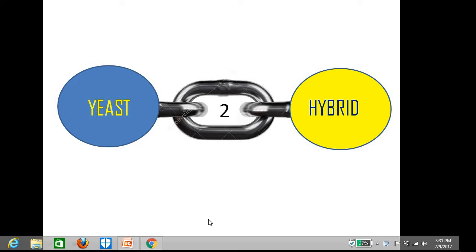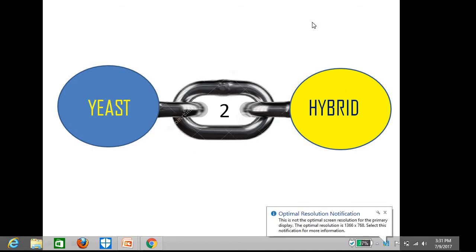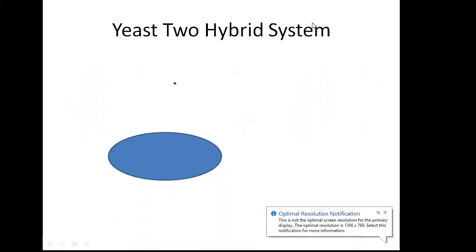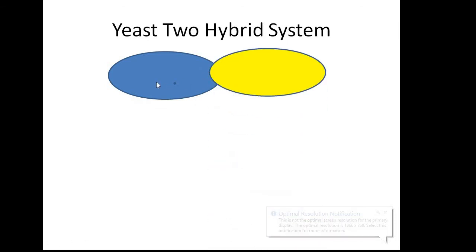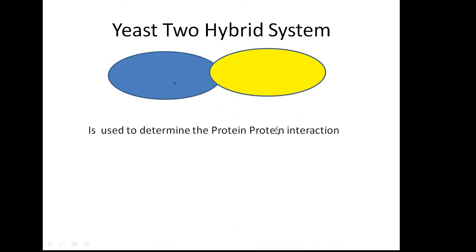Hello friends, today we will discuss the two-hybrid system, a method that is widely used in molecular biology to see whether two proteins, such as protein A and protein B, are interacting or not.